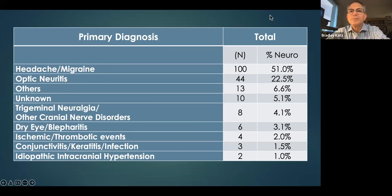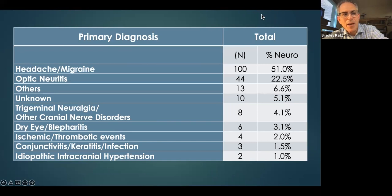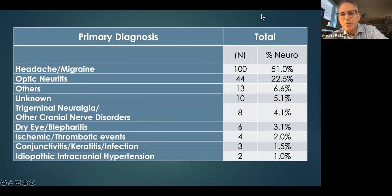In the neurology clinic, the most common root cause of people presenting with eye pain was headache and migraine, optic neuritis a distant second, and then miscellaneous causes like trigeminal neuralgia and some ophthalmic things like dry eye and blepharitis. But far and away it was migraine and headache.